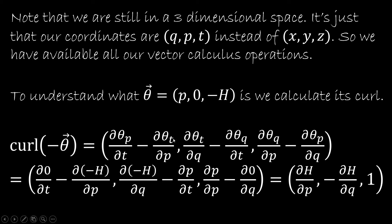So for doing the computation, we take the P component, which is zero. We take the T component, which is minus H. The derivative of zero with respect to T is zero. And the minus the derivative of minus H with respect to P is the derivative of H with respect to P.